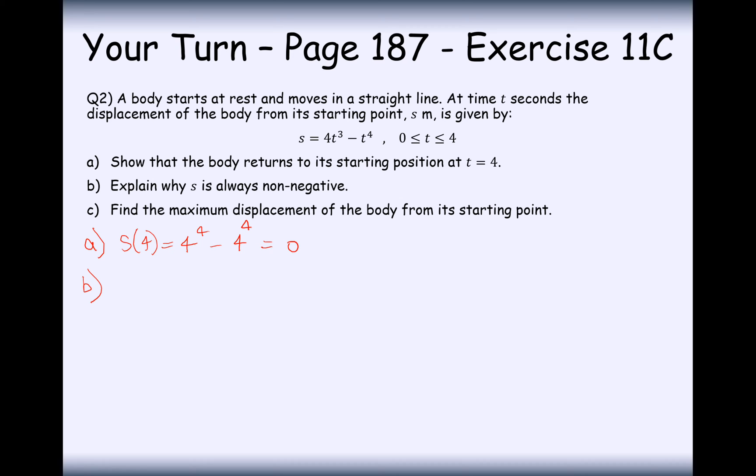Explain why s is always non-negative. Well, because we've got a boundary of 0 to 4, that will restrict it from being non-negative. So if we were to set up an inequality and factorise out the t cubed,